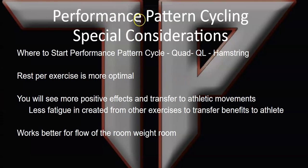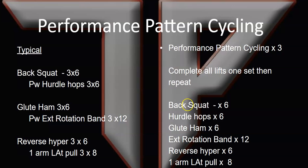Some special considerations for performance pattern cycling — specifically where to start your pattern cycle. If you're a quad dominant athlete, even if you cycle through this and start with a back squat, you'll find that they adapt fairly quickly, and they will adapt in a negative way to that particular exercise. I've been able to identify my athletes through RPR and other methods, and if they're quad dominant, I may start them at a different exercise like the reverse hyper to reduce those negative effects.